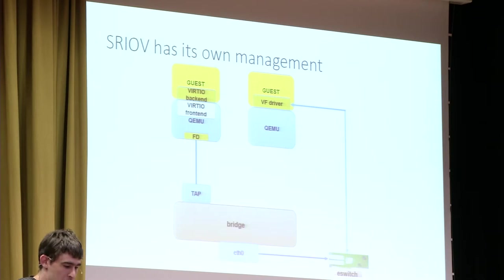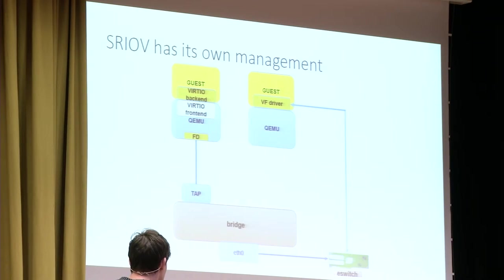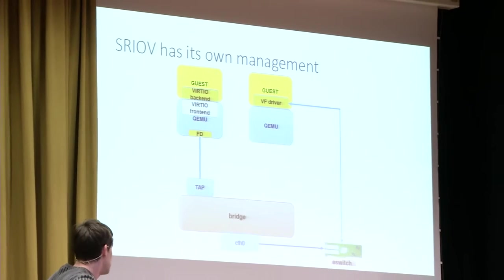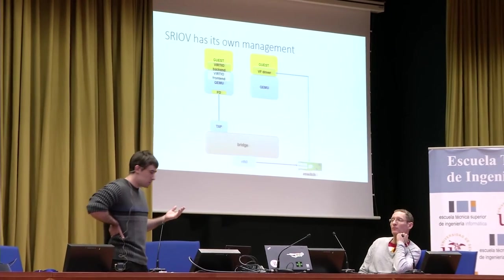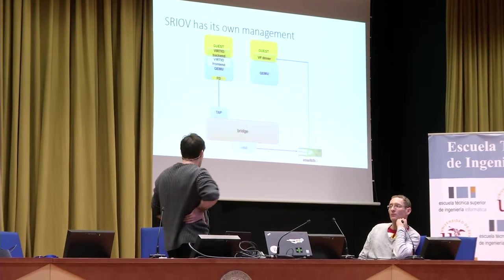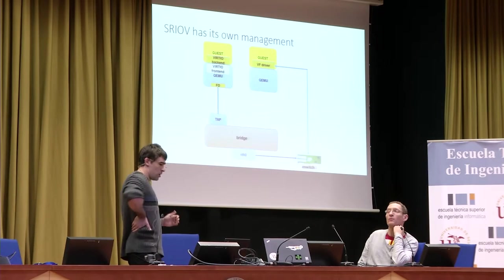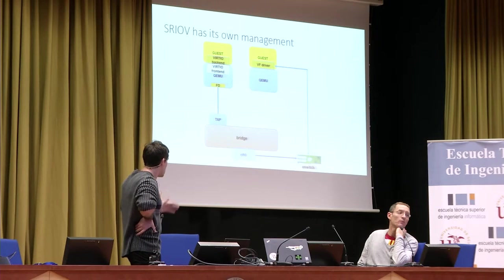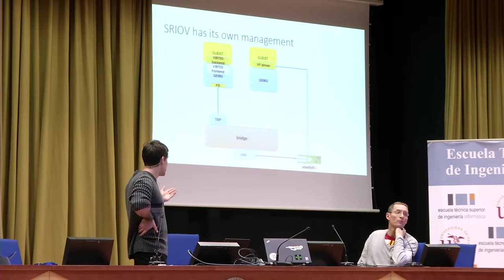To get better performance, we can use something called a virtual function, where instead of QEMU exposing a virtual device, the NIC hardware exposes it. We assign this virtual function to the guest, and then the guest can talk directly to the hardware and send packets this way. The problem is that we skip the virtual bridge in the hypervisor, so we can't control the traffic through it. The hypervisor does need to have some control over the packets that the guest sends.